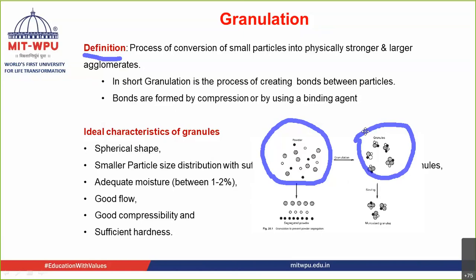Granulation is nothing but the conversion of smaller particles into a more physically stronger, mechanically stronger, and larger agglomerate. This agglomerate is nothing but a granule. In short, granulation is the process in which bonds are created between the particles.